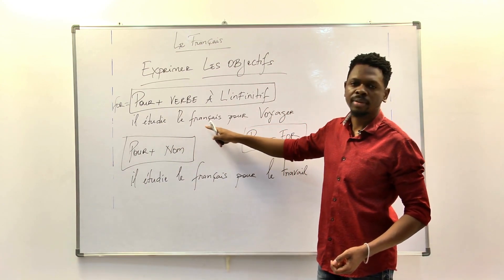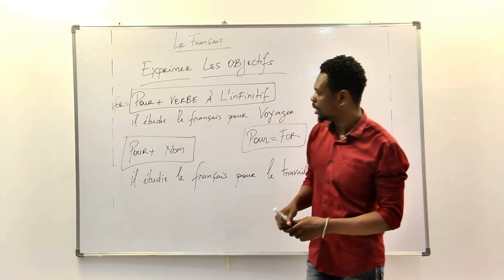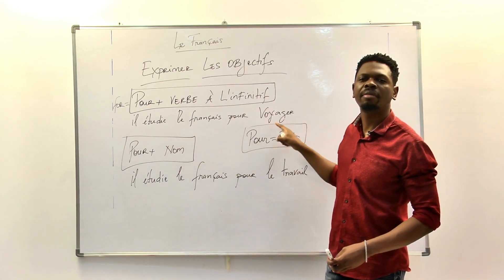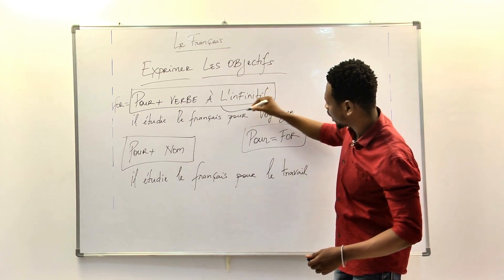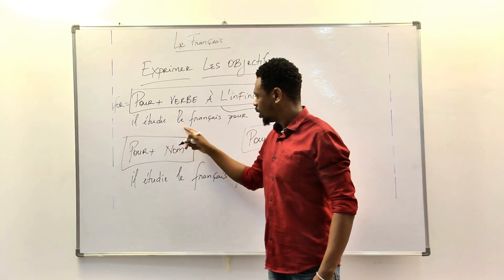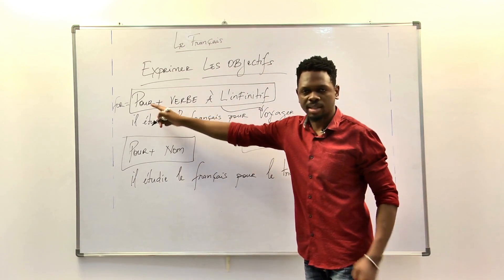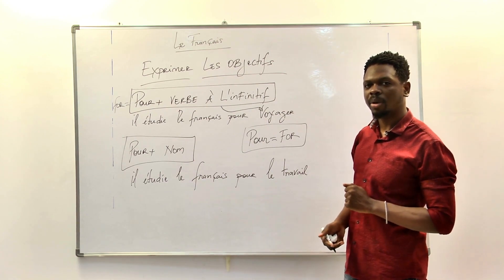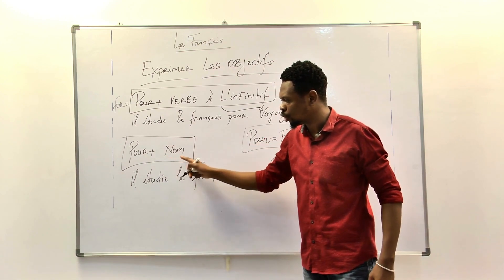Il étudie le français pour voyager. This is verbe in infinitif. Pour means for. Verbe à l'infinitif, voyager. Voyager in English becomes to travel, travelling. And here we have pour plus nom.